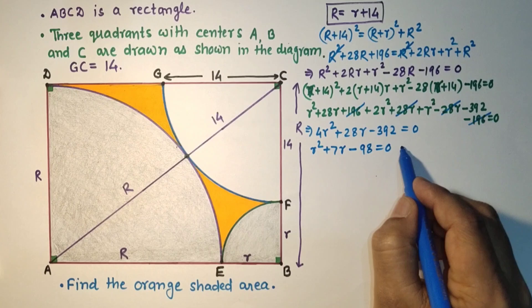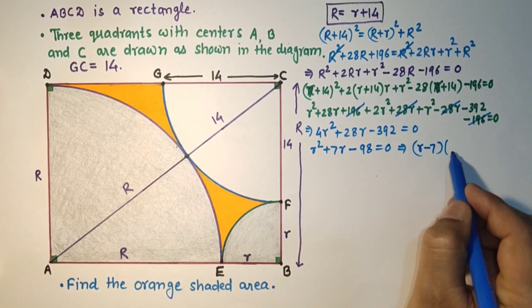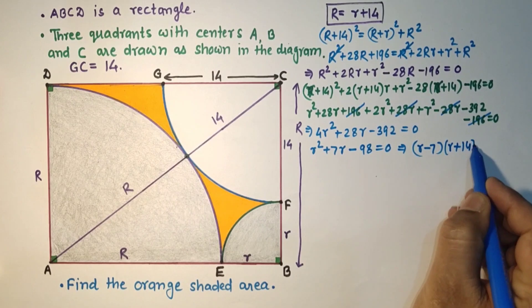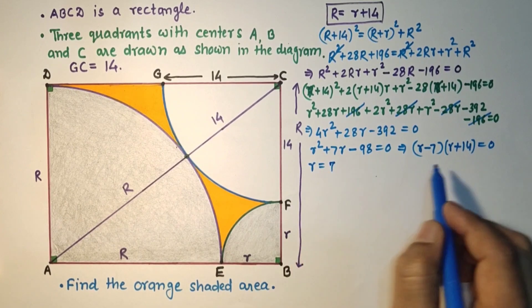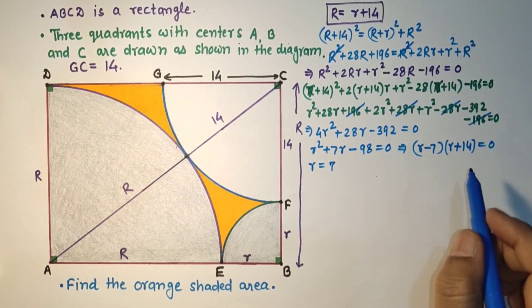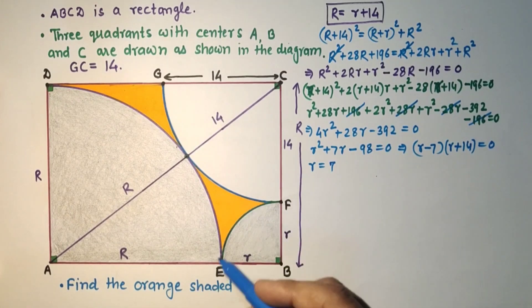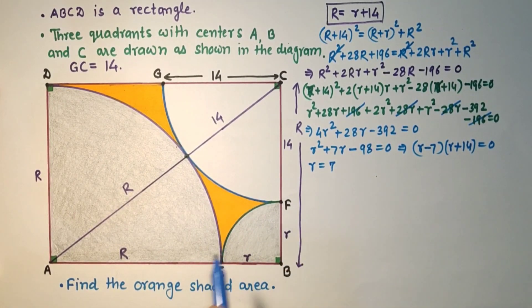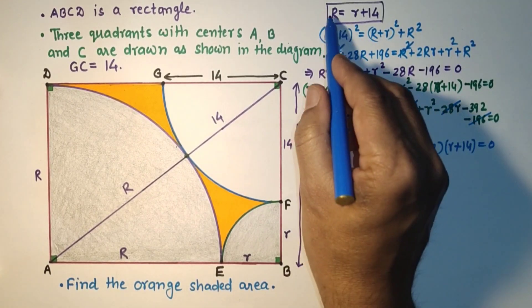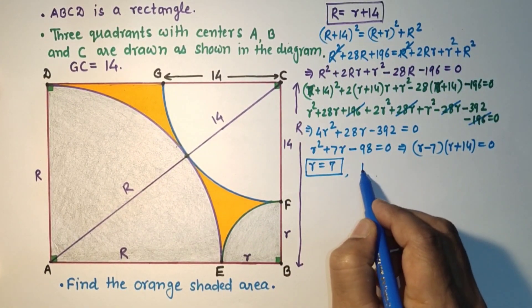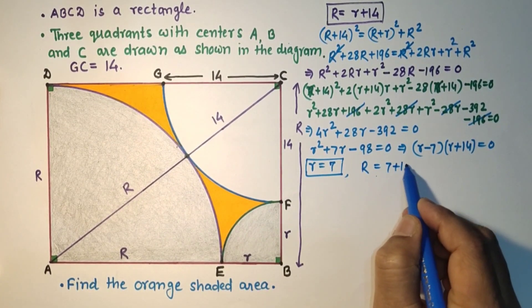Factoring the quadratic, we get (r − 7)(r + 14) = 0. So r = 7, and r = −14 will not be accepted because a negative value of radius is ignored. So we found r = 7. And if r is 7, then capital R = 7 + 14 = 21.